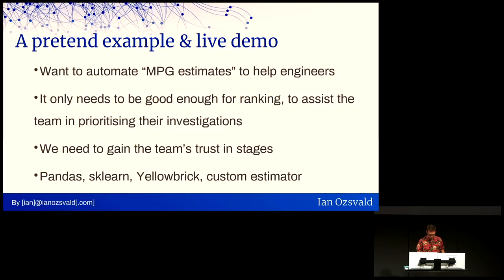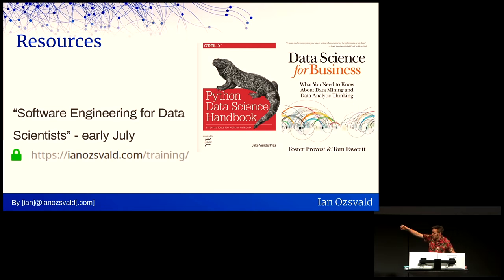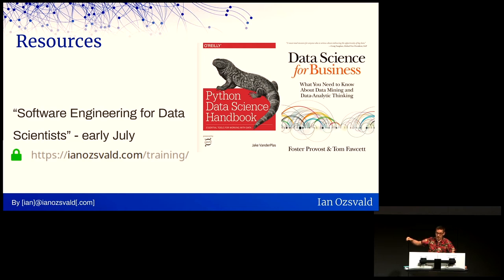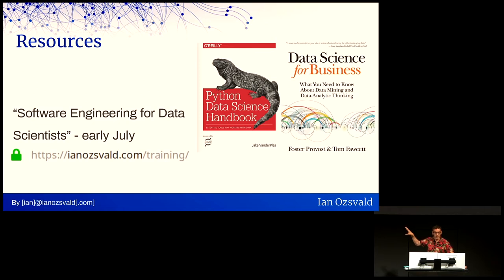Back to finish off the talk — a couple of resources. I've got a training course coming up in a couple of weeks aimed at data scientists. The two books on the right will be interesting to you: the Python Data Science Handbook by Jake VanderPlas is a really good software-engineering-focused introduction to the world of data science — not just machine learning, but data science and data analysis in general. And for your managers, Data Science for Business is a formula-heavy book, but the formulas are really easily explained with lots of nice diagrams and intuitive explanations. I recommend both for different components of your team.